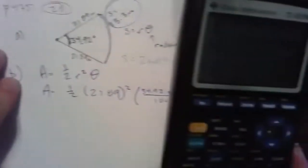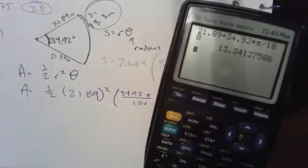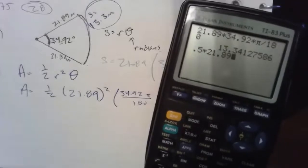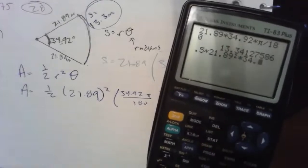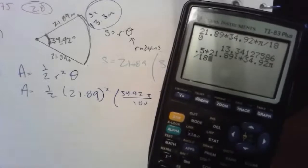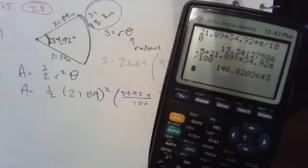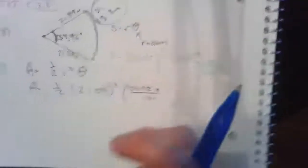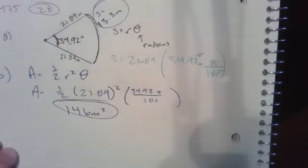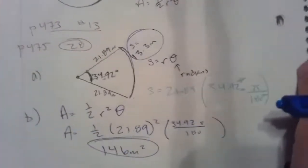21.89 squared times 34.92 pi over 180, enter, and it looks like we get an area of around 146 meters squared for all fair throws.